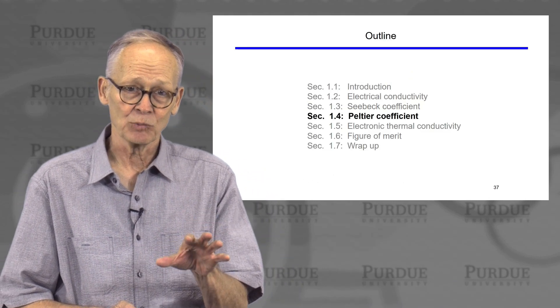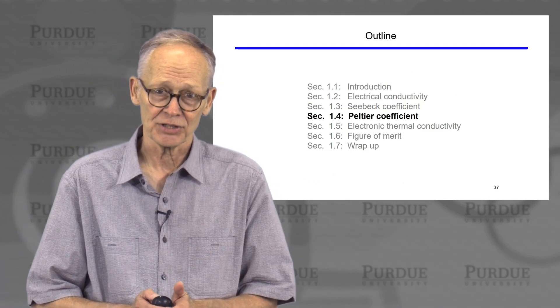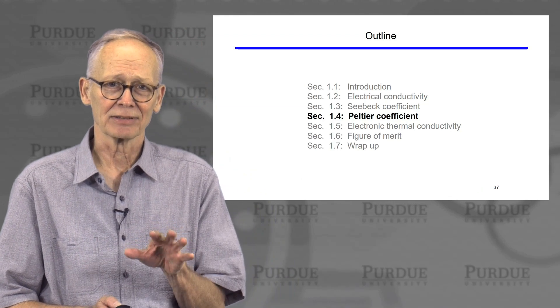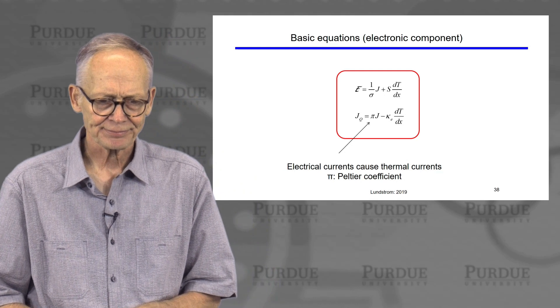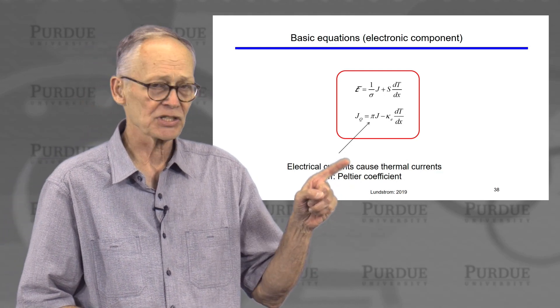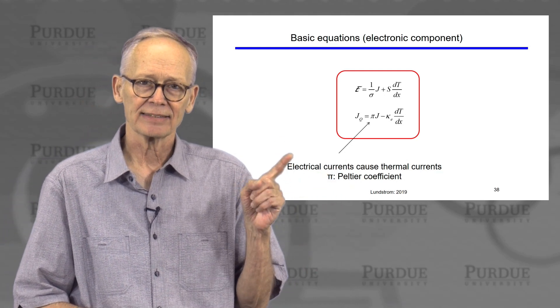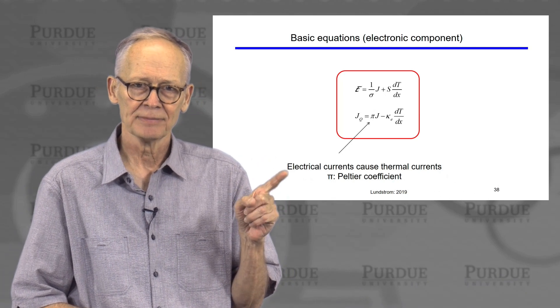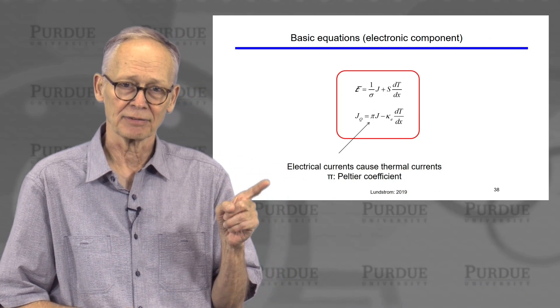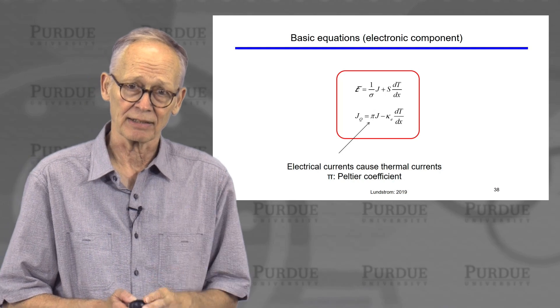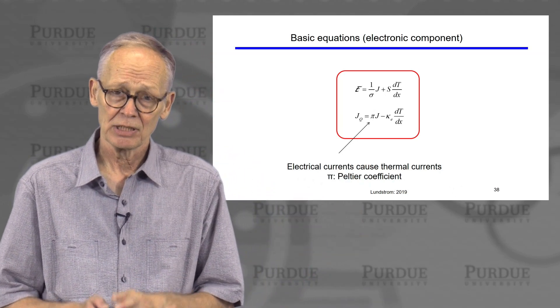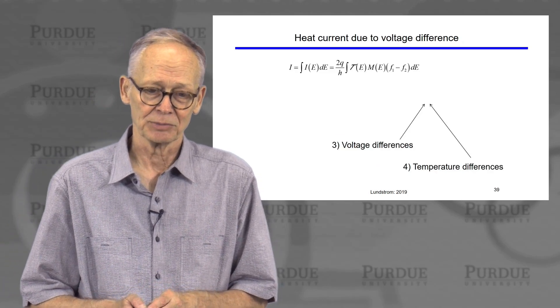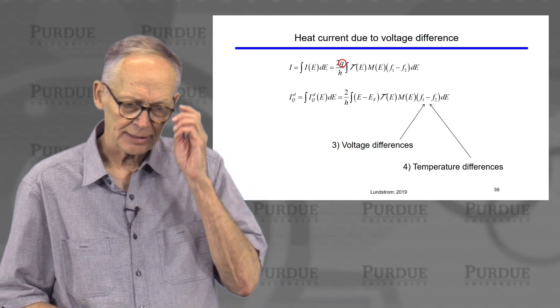Now we could do this in the same way that we did the Seebeck coefficient, but actually it turns out that there is a shortcut for the Peltier coefficient. The Peltier coefficient tells us that if there is an electrical current flowing, there is also a heat current flowing at the same time, due to that electrical current. And the Peltier coefficient is called pi. This is what we want, we'd like to understand what determines pi.